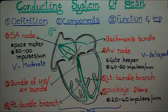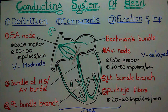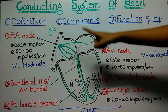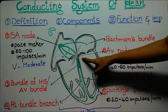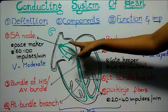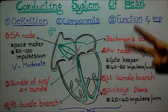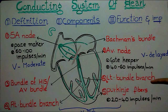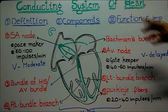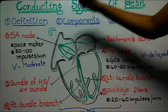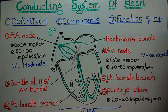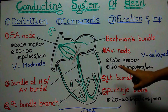Let's revise the three important features of the AV node, as they help in ECG interpretation. First, the AV node is the only connection between the two atria and two ventricles. Second, it delays the impulses, helping the atria to contract first. Third, it can generate impulses at a rate of 40 to 60 per minute.